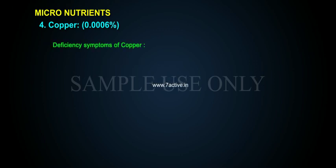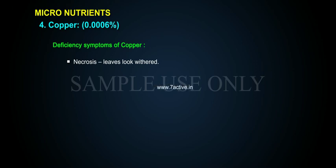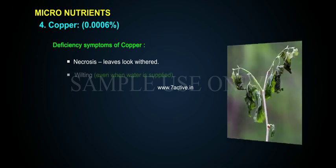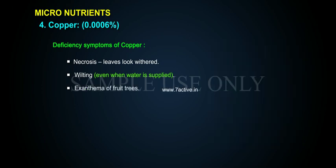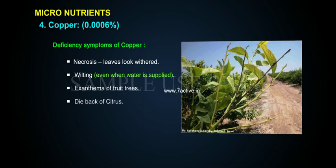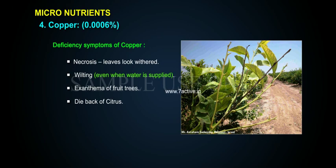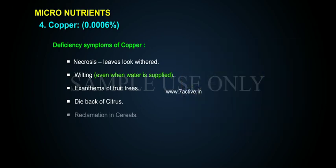Deficiency symptoms of copper: necrosis, leaves look withered, wilting even when water is supplied, exanthema of fruit trees, dieback of citrus, and reclamation disease in cereals.